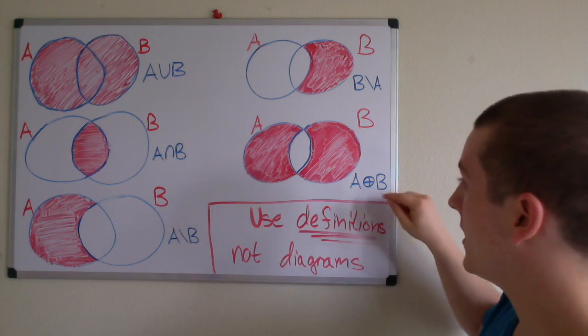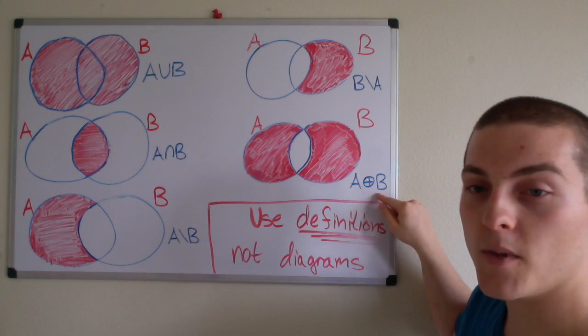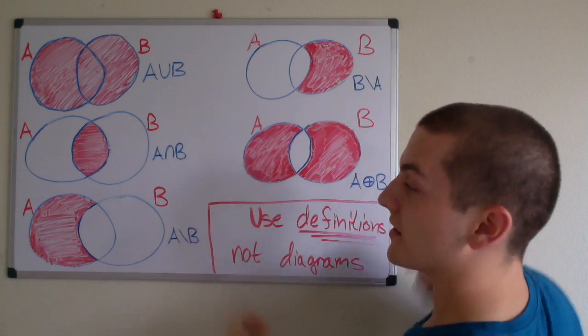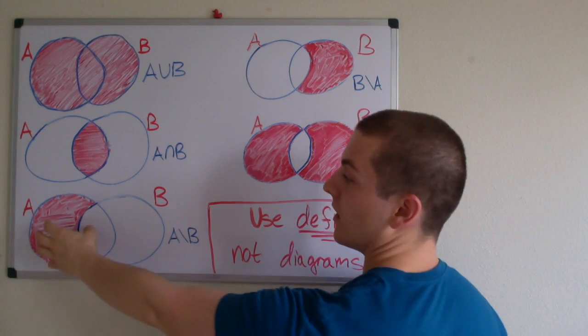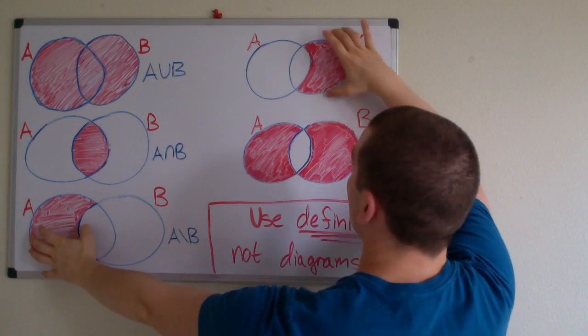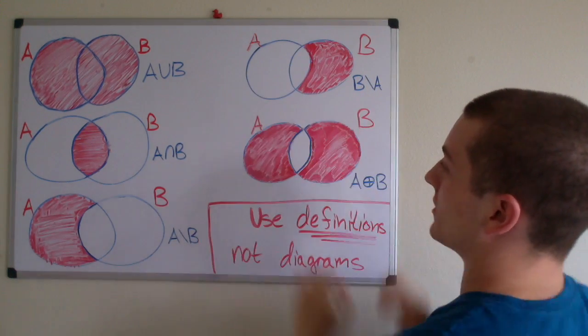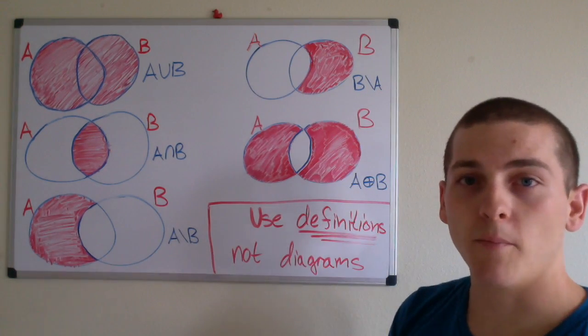Finally, the symmetric difference of A and B is defined as the union of A minus B and B minus A. We take this region and this region and take the union of it, which is why this is the resulting region. There's no overlap between the two.